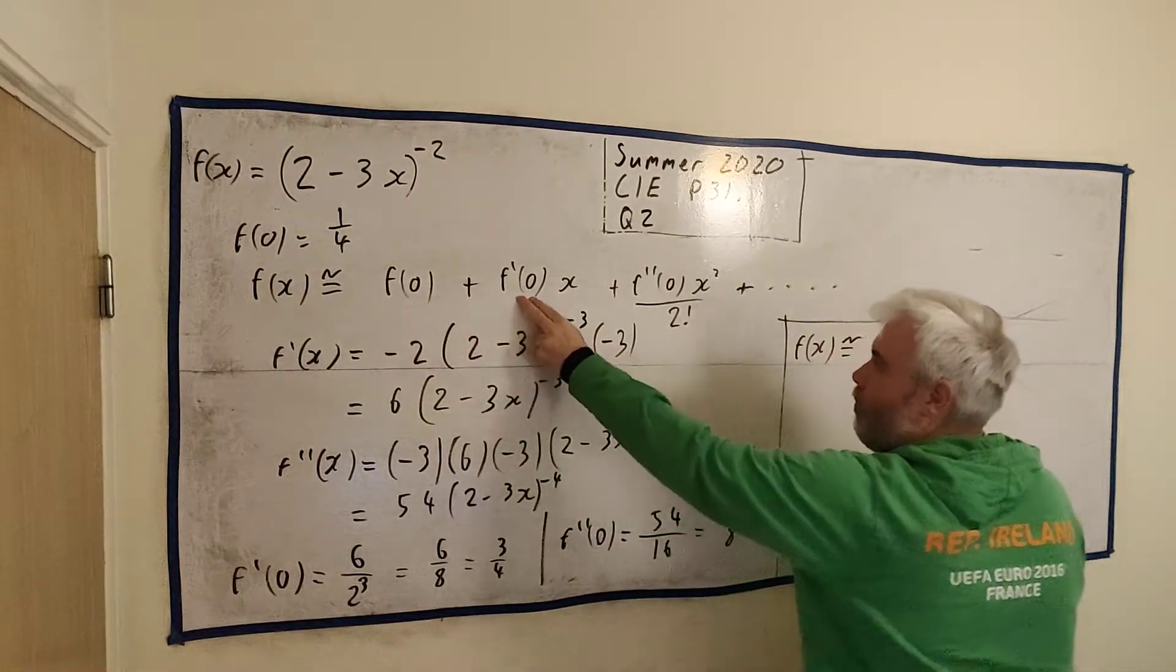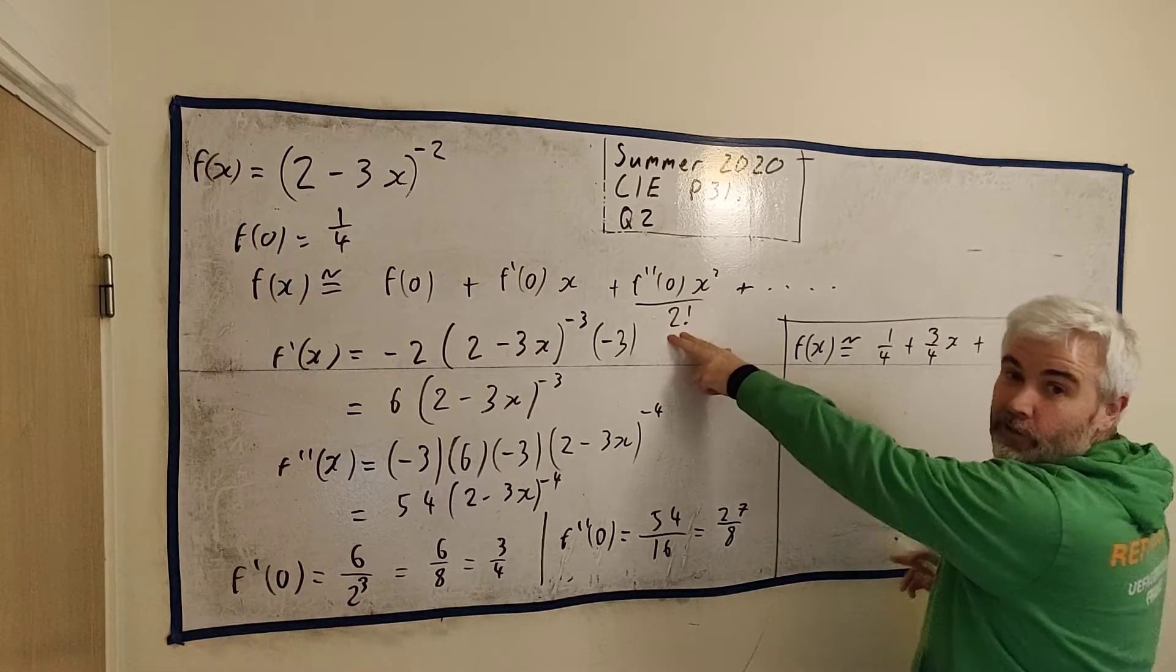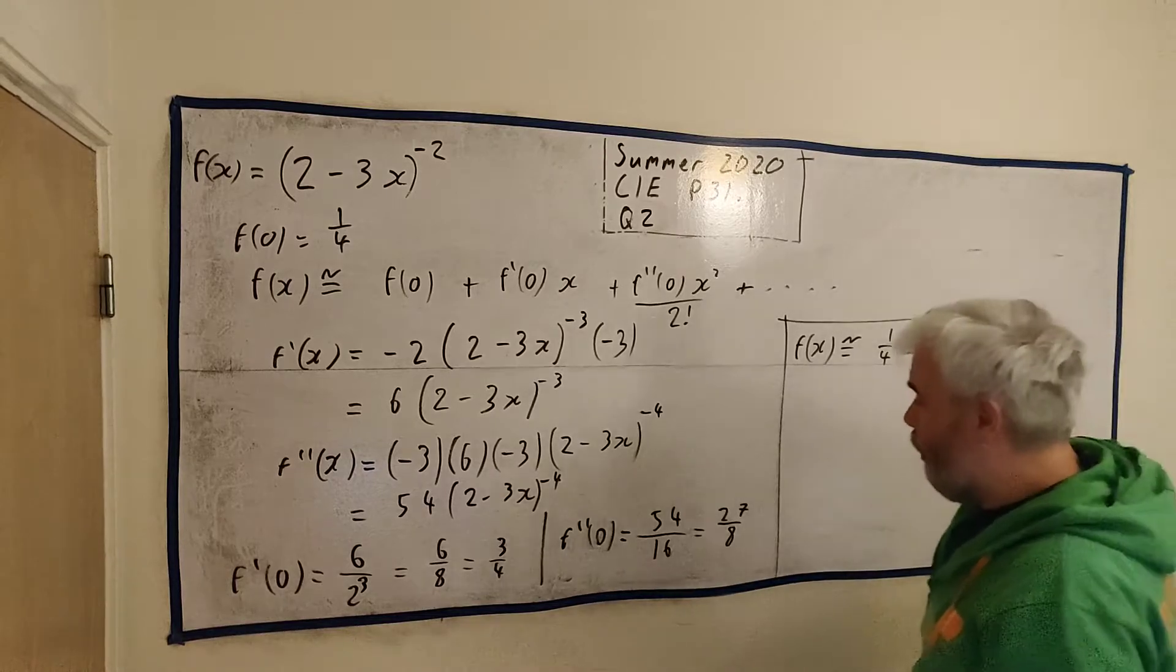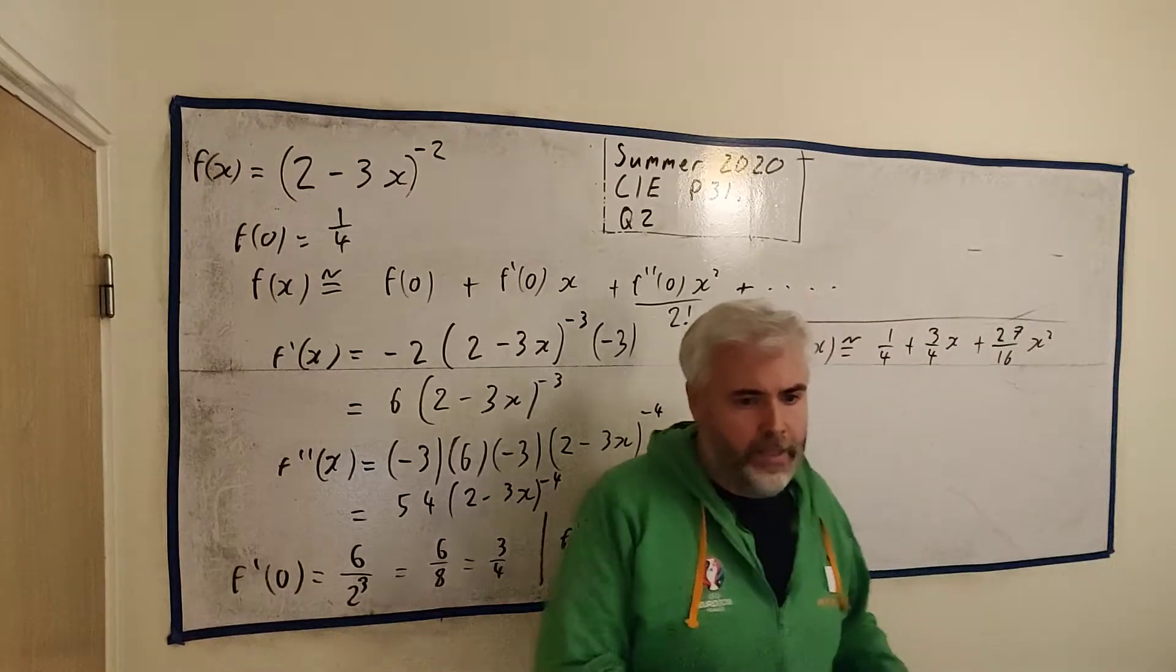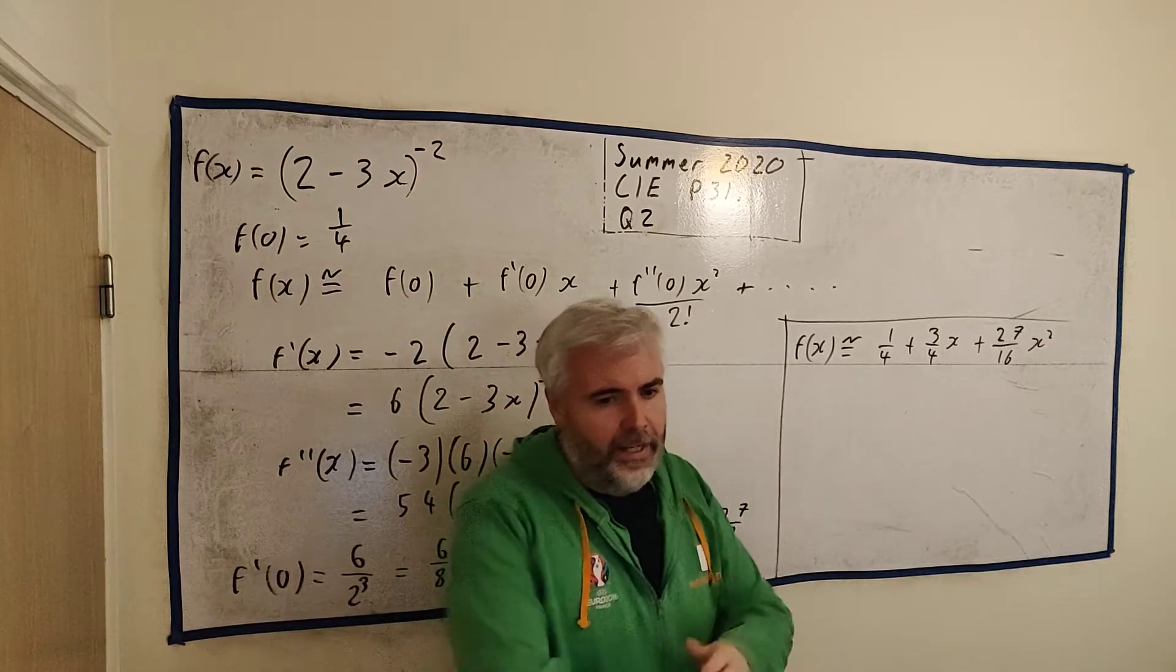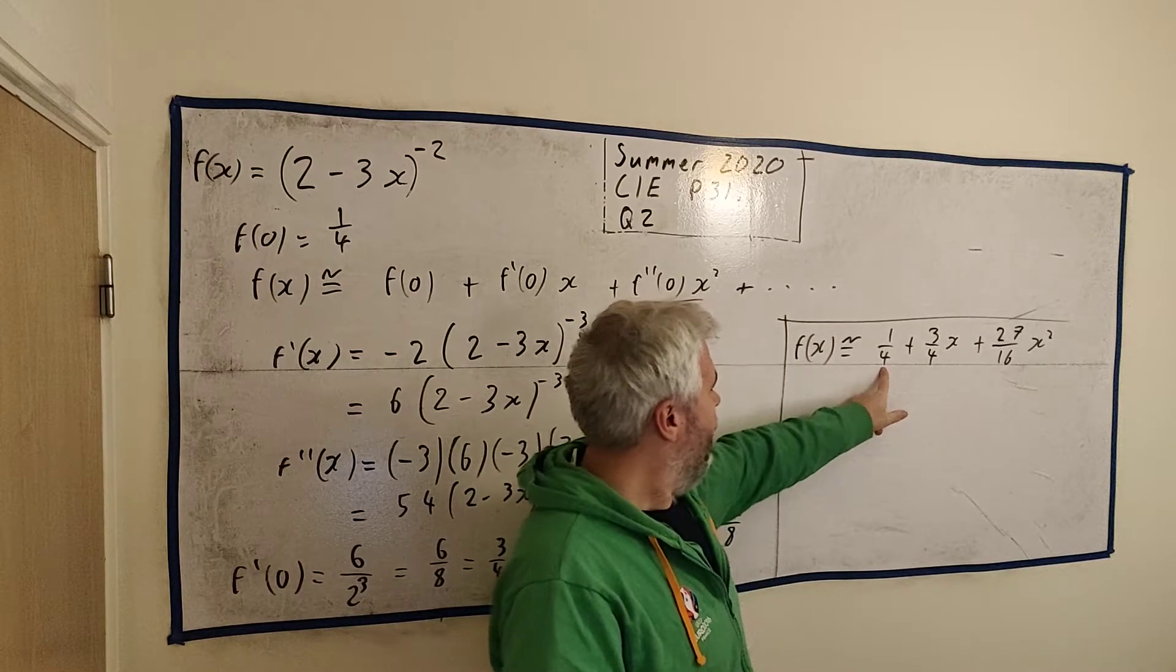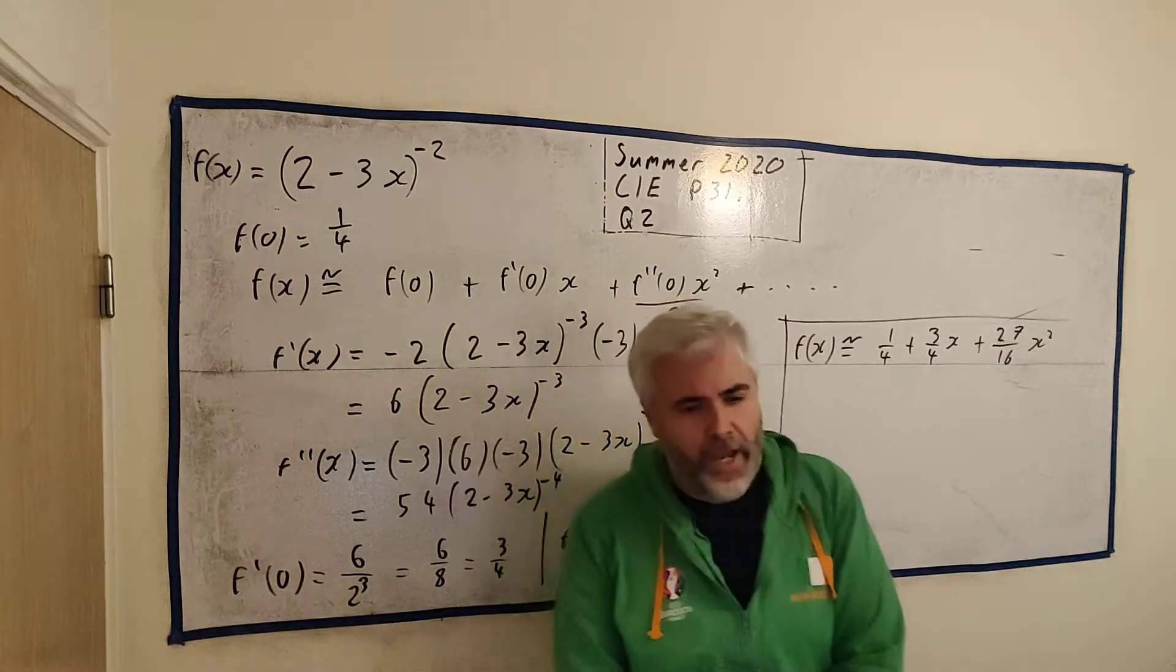So what do we have? We have 1 over 4, 3 over 4 times x. And we have 27 over 8 and another 2. So that's 27 over 16 times x squared. And we could stay going. We'd have to do another derivative here. But that's it. That's the answer to the question... Oh, there's a second part. That's the answer to part A. In ascending powers of x, including the terms x squared. So that's it. There are all the coefficients. A quarter, three quarters, 27 over 16.